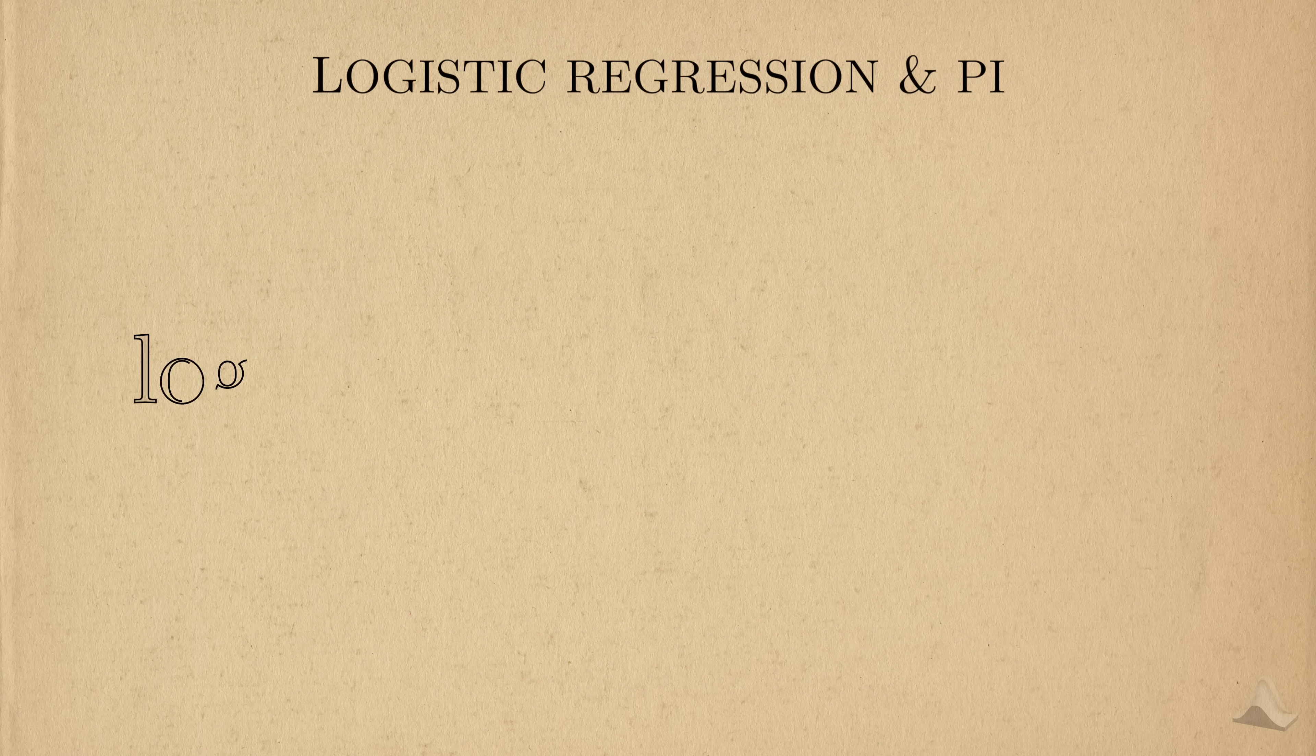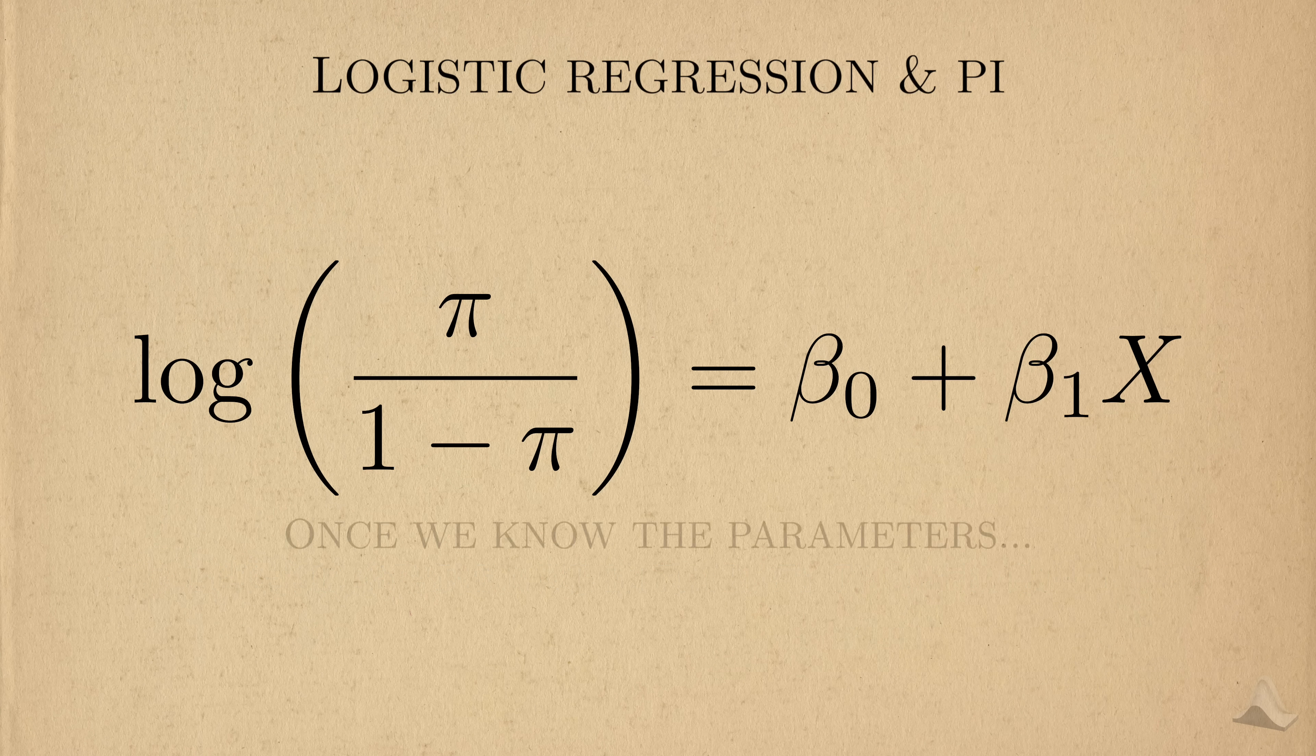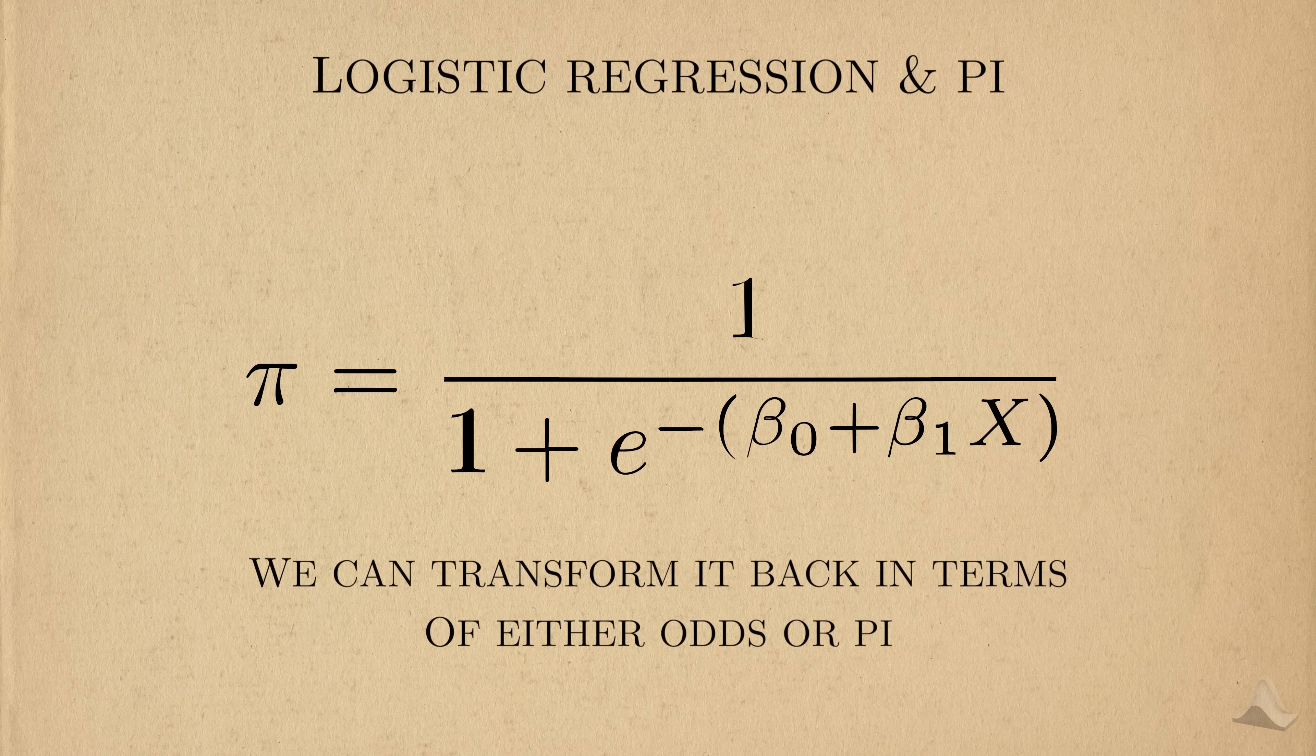In logistic regression, covariates change the log odds that an outcome will happen. Log odds are not that intuitive from a human perspective, but once we know how the log odds change, we can translate it back into terms like odds or in terms of pi.